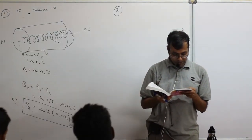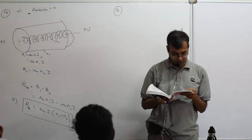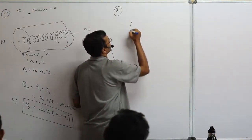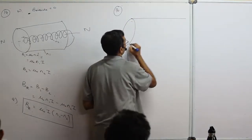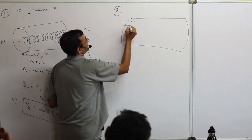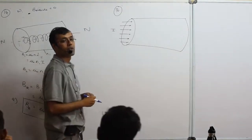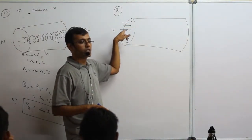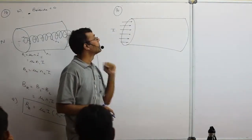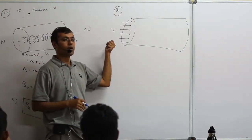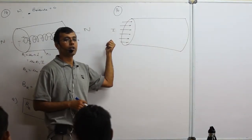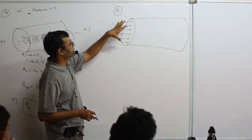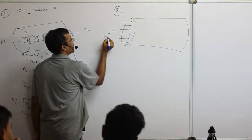A long straight wire of circular cross-section of radius a carries a steady current I uniformly distributed across the cross-section. They ask for the magnetic field for r > a and r < a. There is a big rod with current I flowing through it evenly — it is a ratio: for a given area, a proportional current flows.